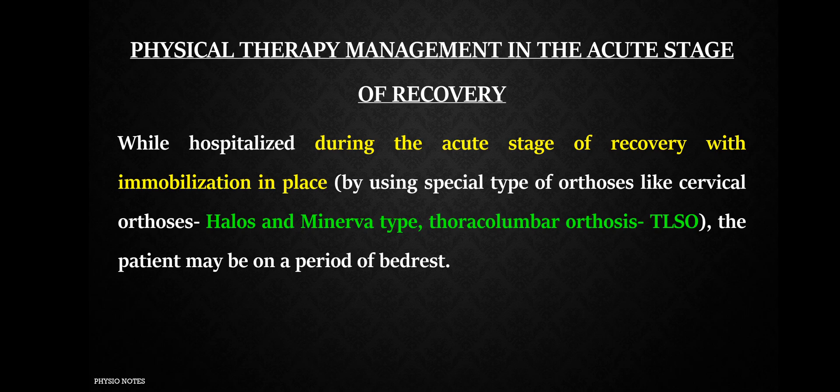First, we discuss physiotherapy management at the acute stage of recovery. During this time, the patient is immobilized with special orthoses depending on the site of injury. For cervical injury, halo or Minerva orthosis is used; for lumbar or thoracic injury, a thoracolumbar orthosis is used. The patient is on bed rest.